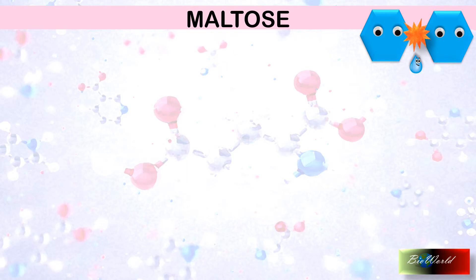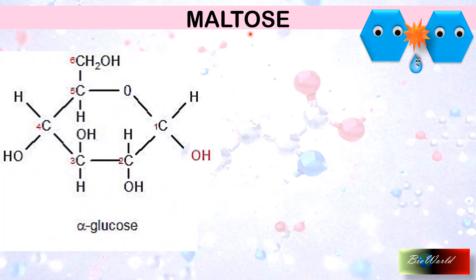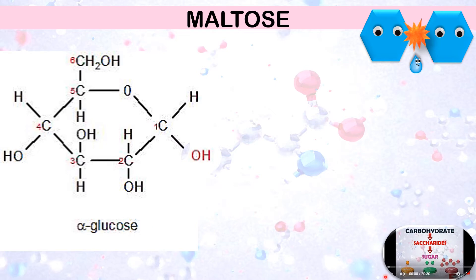I'll start with the condensation between two glucose molecules to form maltose. For the condensation process, illustration is important. So I'll start by drawing a ring structure of an alpha glucose molecule. I've introduced ring structures as well as alpha glucose in my video on carbohydrate part one, so please view that video to refresh.